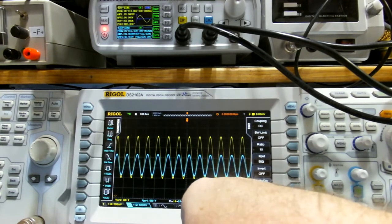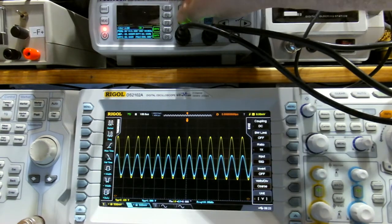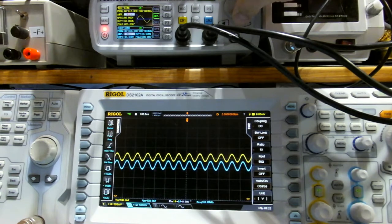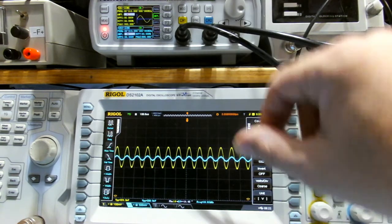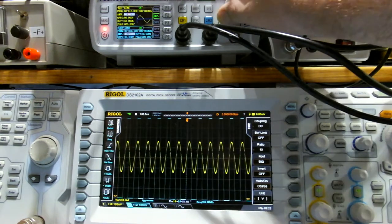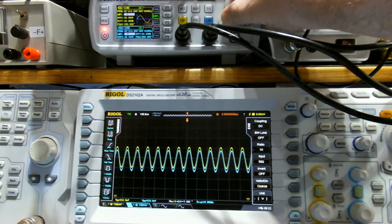The other thing that I've noticed is if I go to channel 1, amplitude, drop it back down to 0.5 volts.